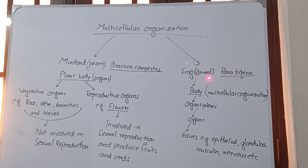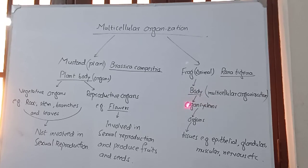Now talking about the frog, which is an animal — its scientific name is Rana tigrina. Its body shows multicellular organization, and this body is made up of organ systems. These organ systems are made up of organs, and the organs are made up of tissues, for example epithelial, glandular, muscular, nervous, etc.